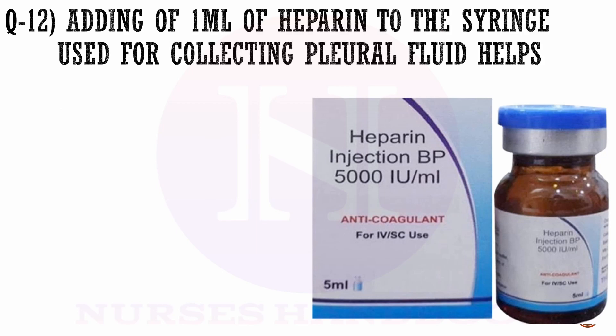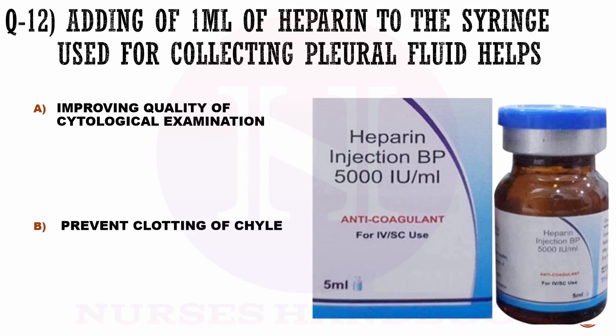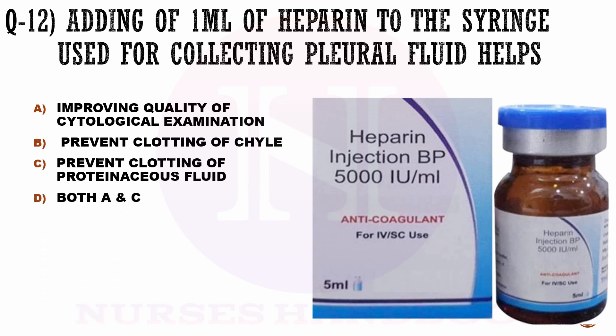Question number 12. Adding 1 ml of heparin to the syringe used for collecting pleural fluid helps in: option a) improving the quality of cytological examination, option b) preventing clotting of chyle, option c) preventing clotting of proteinaceous fluid, and option d) both a and c. The correct answer is option d, both a and c.